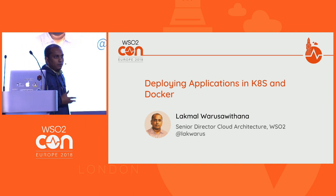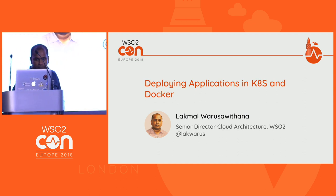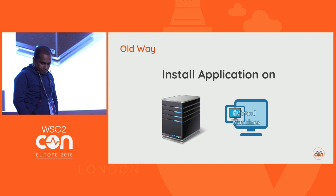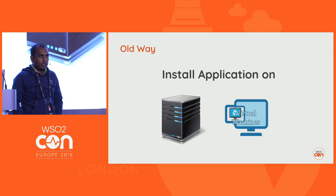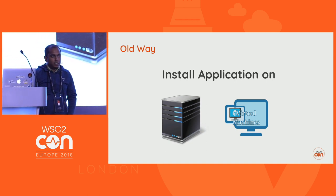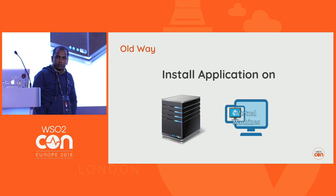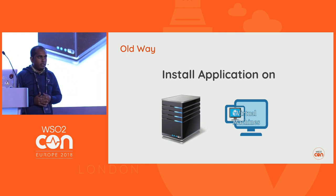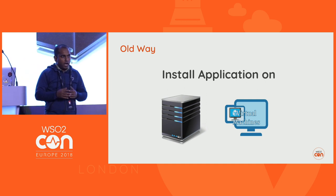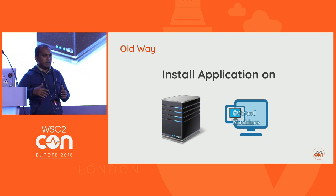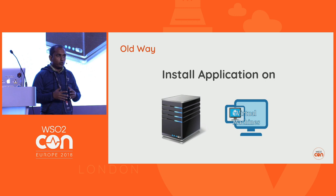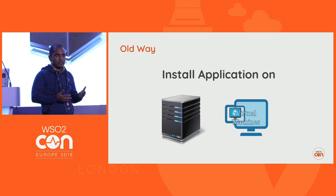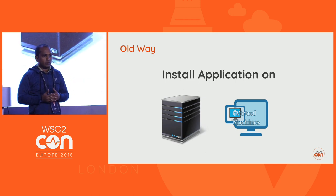A lot of people are now using Docker and Kubernetes in their day-to-day work. In the past, in the old days, after we built our application, we used to install and configure it on top of either a bare-metal machine or a VM. The steps were: get the machine, install the OS, install all dependencies and libraries, then install and configure the application. To scale, you'd repeat all three steps on a new machine. Sometimes these were manual steps; other times we used Puppet, Chef, or Ansible to automate them.